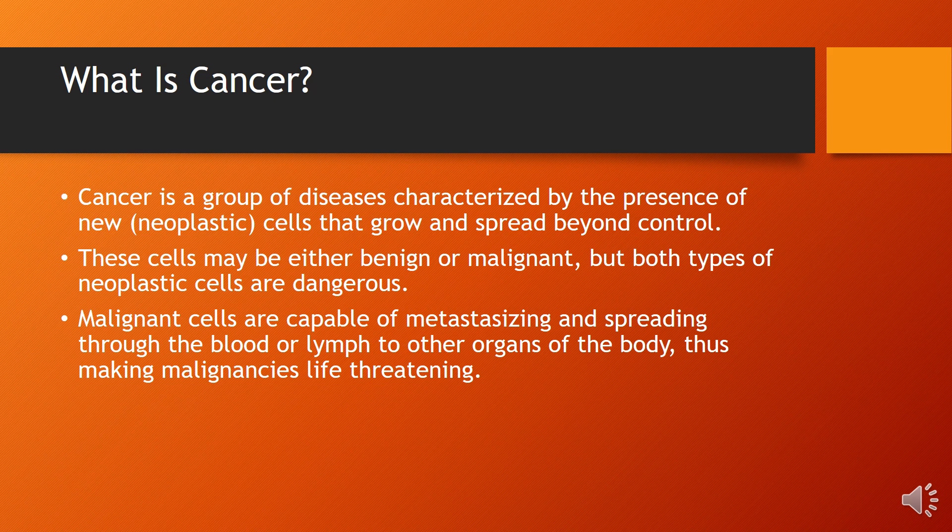Cancer is no more an unknown disease — it is usually said to be a silent killer. It is a group of diseases characterized by the presence of neoplastic cells that grow and spread beyond control. These cells may be either benign or malignant. Benign cells occur at one place and may be removed through surgery and do not reoccur. Malignant cells, however, may reappear even after surgery and may spread to other parts of the body. Malignant cells are capable of metastasizing and spreading through the blood or lymph to other organs.